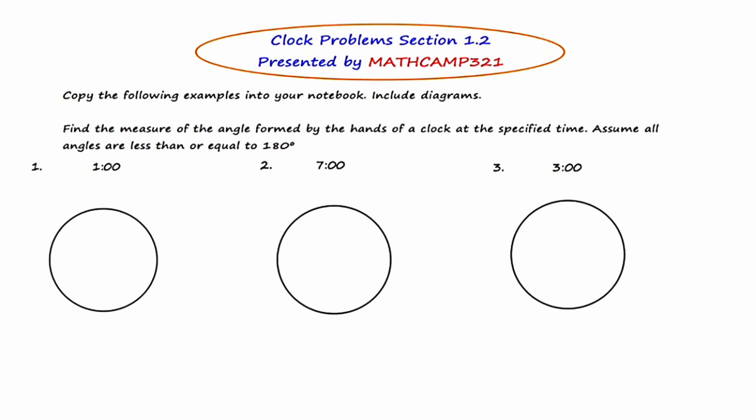Find the measure of the angle formed by the hands of a clock at the specified time. Assume all angles are less than or equal to 180 degrees. Well, before we get started, there's a few facts that you need to know, and you might know them already, but we have to review them nonetheless.